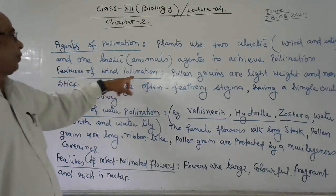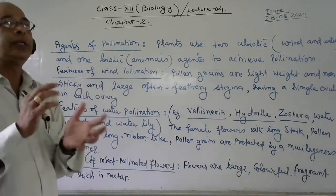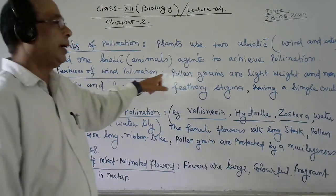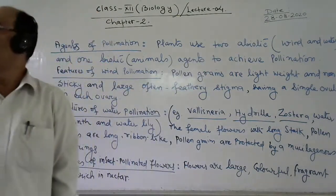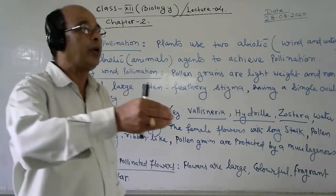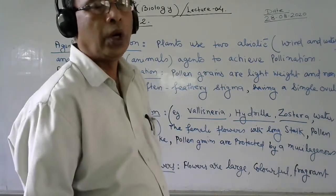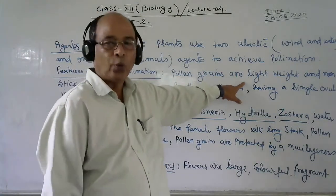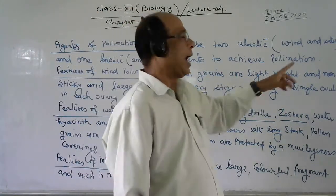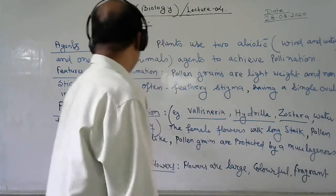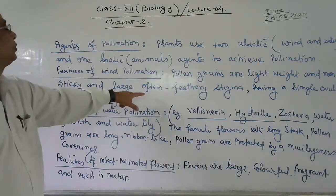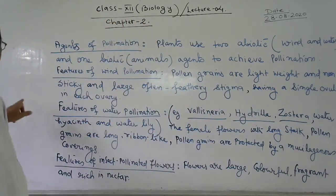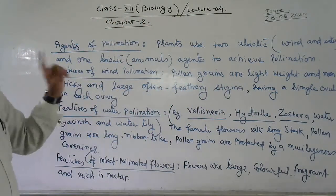What are the features of wind pollination? In the case of wind pollination, the pollen grains fly or travel from one place to another with the help of air currents. That is why the pollen grains are light weight and non-sticky. The stigma is large and open, feathery, and each flower has a single ovule.